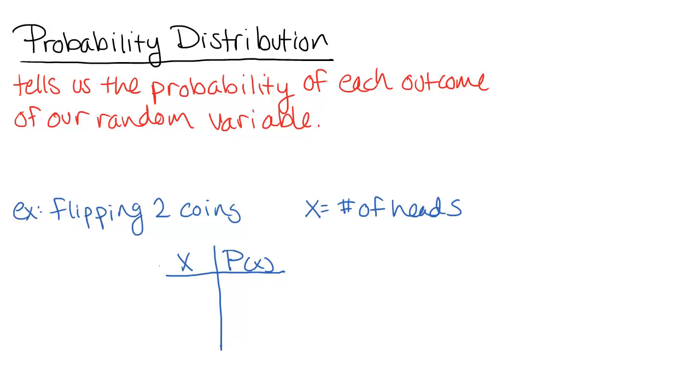So if we have a random variable, a probability distribution is basically something that tells us what the probability of each outcome is for our random variable. For a simple example here, if we're flipping two coins and our random variable is the number of heads, well, we could have zero heads, one head, or two heads.